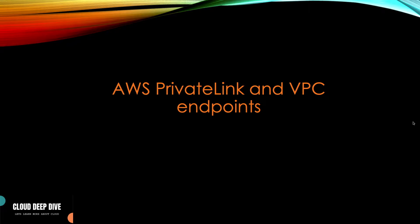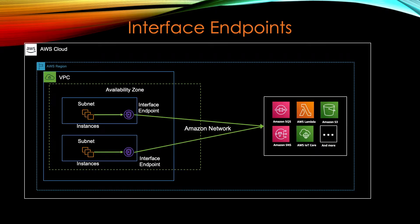Let's talk about interface endpoints and how they differ from gateway endpoints. With gateway endpoints, a virtual gateway is created and a route is added to your route table. Your EC2 instance uses that route table to find the next hop — which is the gateway endpoint — and from there connects to your AWS service. With gateway endpoints you can only connect to S3 and DynamoDB; no other services.